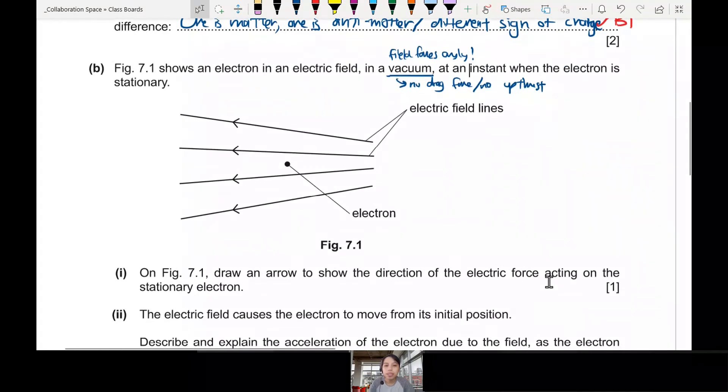What are we supposed to draw first? Draw an arrow to show the direction of the electric force acting on the stationary electron. Remember, electric field lines are pointing to the left. And this is an electron. This is a rebel. So the electric force actually will be pointing to the right for this electron. Because for electrons, if your E points to the left, your F points to the right. So draw to the right, that's okay.